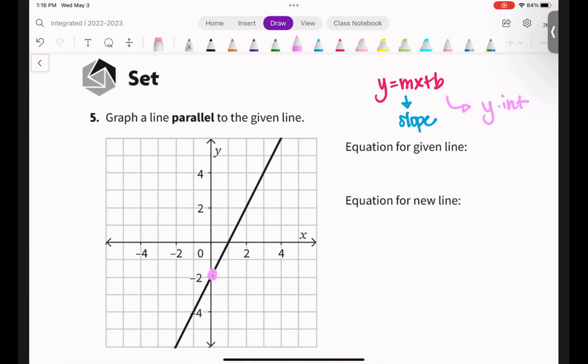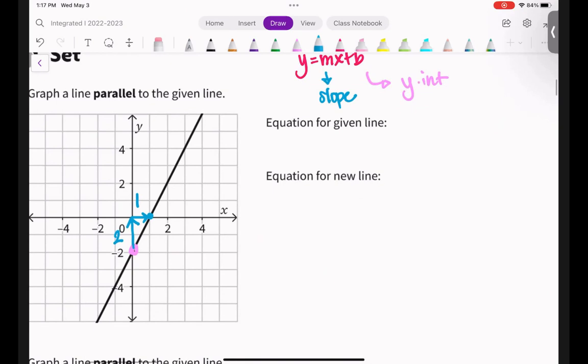And your slope is just you counting. So you find a good point, say like right here, and you find another good point, and you count how far, how many on the elevator to go up, and how much over. Because I went up, that's 2, positive 2. And because I went to the right, which means positive, that's positive 1. So my slope in this case is 2 over 1. And my y-intercept in this case is negative 2.